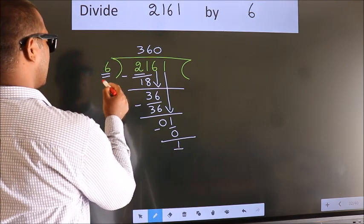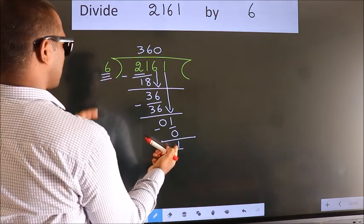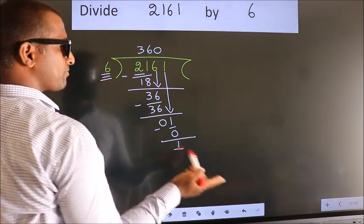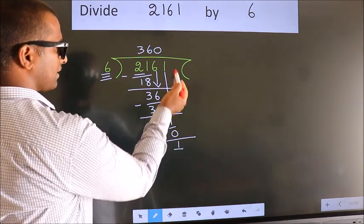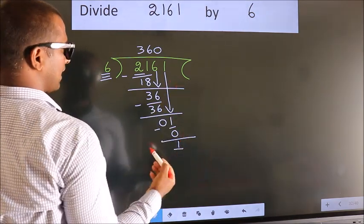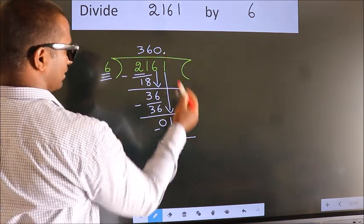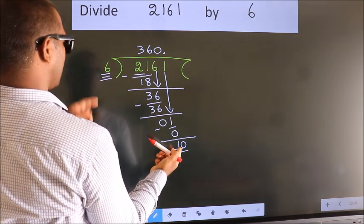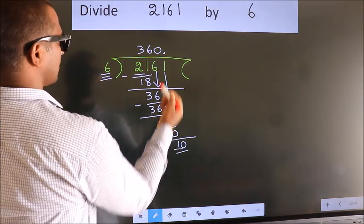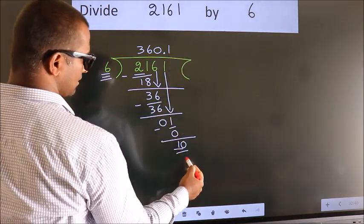Here we have 1, here 6. 1 is smaller than 6, and we did not bring any number down. So now we can put dot, take 0, giving us 10. A number close to 10 in the 6 table is 6 once, 6.